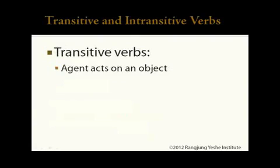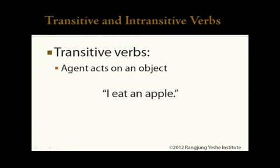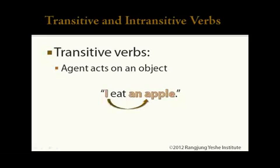Transitive verbs have a subject that acts on a different object. For example, the verb 'to eat' is transitive. When I say 'I eat an apple,' there is the subject 'I' and the object 'apple.' The subject is doing something to the object.